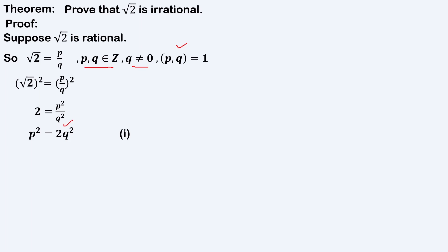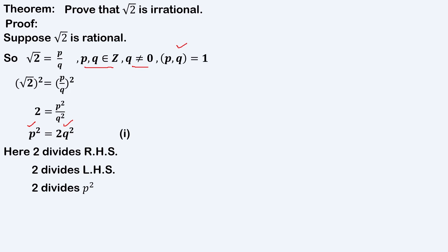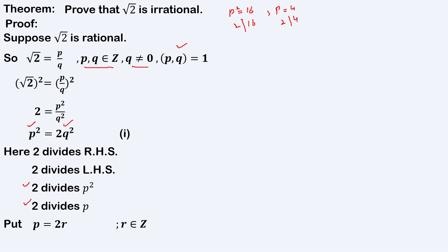The right-hand side is divisible by 2, so the left-hand side must also be divisible by 2 — that is, 2 divides the RHS, so 2 divides the LHS. It means 2 divides p squared, so 2 divides p. To explain: suppose p squared equals 16; 2 divides 16, and we get p equals 4, and 2 also divides 4. So if 2 divides p squared, then 2 must divide p. By definition we can write p equals 2r, where r is also an integer.